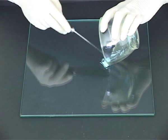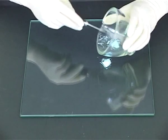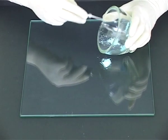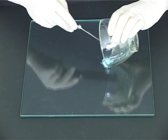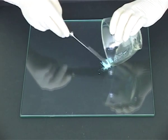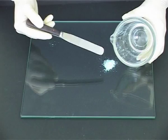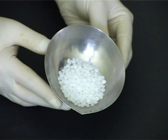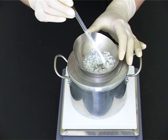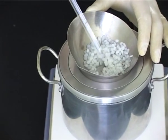Transfer the powder to a clean glass tile using a spatula. Place the previously weighed suppository base into an evaporating basin and place the evaporating basin on the water bath.